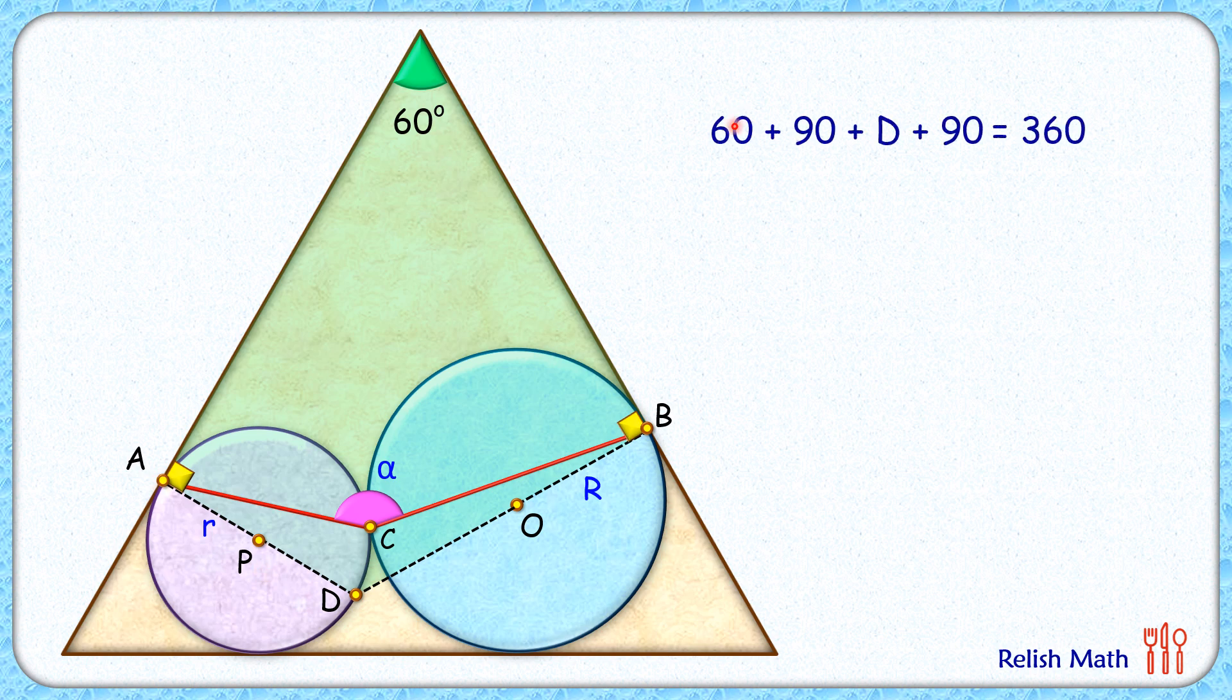So the sum of all these angles is 360. Solving it we'll get the value of D as 120, so this angle D here is 120 degrees. Also we know that when two circles are touching each other, then their centers, that's point P and point O, and the point of contact, that's point C, they lie in a straight line.